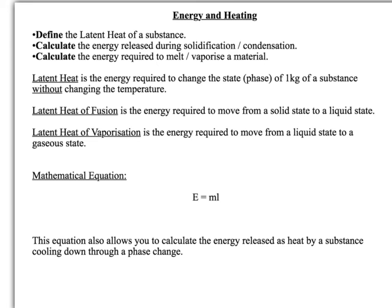Latent heat is the energy required to change the state of one kilogram of a substance without changing the temperature. So it's the energy required to go from a solid to a liquid or a liquid to a gas, or the energy released when you go back from those. Latent heat of fusion is the energy required to move from a solid state to a liquid state. And the latent heat of vaporization is the energy required to move from a liquid state to a gaseous state.